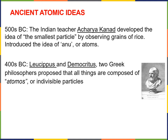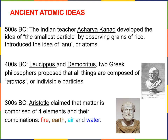A little bit later, independently, two Greek philosophers named Leucippus and Democritus developed an atomic theory that said all things are composed of atomos, or indivisible particles. Following them came Aristotle, perhaps the most famous philosopher of the ancient world. Aristotle claimed that matter is comprised of four elements — fire, earth, air, and water — and that any material could be broken down into one or more of these. Unlike modern scientists, these philosophers did very little to test their ideas.